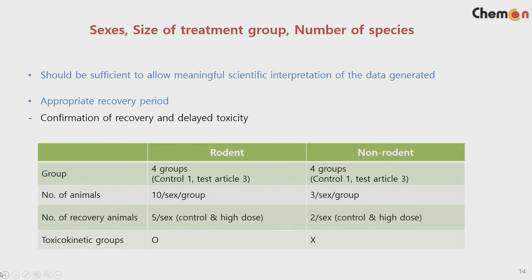For the toxicokinetic groups in non-rodent, we do not need a separate group. For example, for Beagle dogs, a large volume of blood circulates, so we can draw blood every hour over 24 hours from the same animals. For non-rodent, we have only about three animals per sex per group, so the number is not large. This means non-rodent data shows variability between animals, and therefore the analysis needs to be more refined and sophisticated.